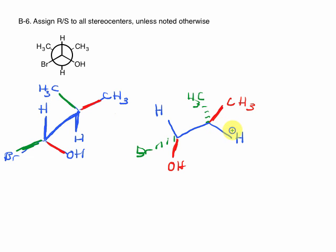We have converted our sawhorse to a line diagram, and the next step is determining R and S. Let's look at our line diagram. How many chiral centers do we have?